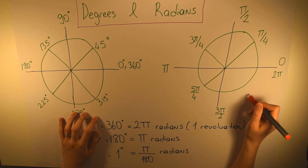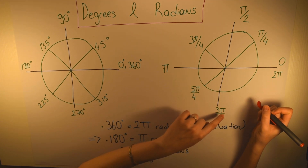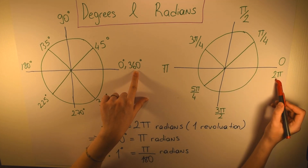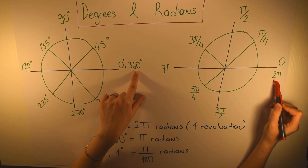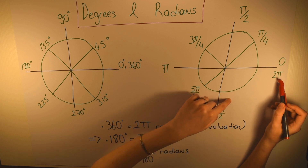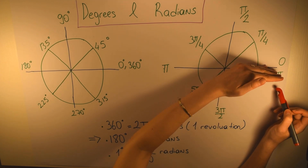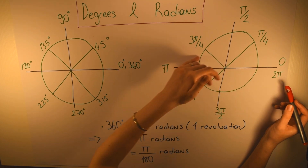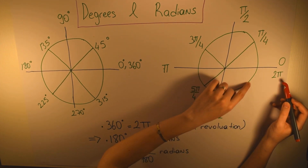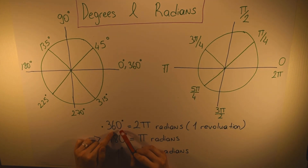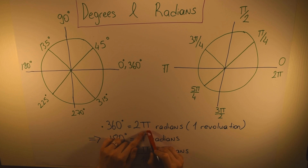What is the radian? One revolution measured in radians is 2π, which means 360 degrees equals 2π radians. Here π is the constant approximately 3.14. The circle starts with zero and then goes π/4, π/2, 3π/4, all the way to 2π — and this is one revolution. So 360 degrees is equal to 2π radians.